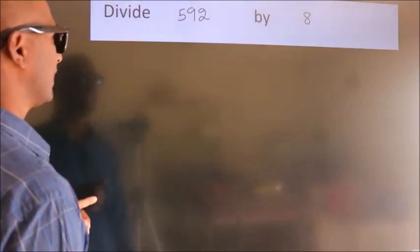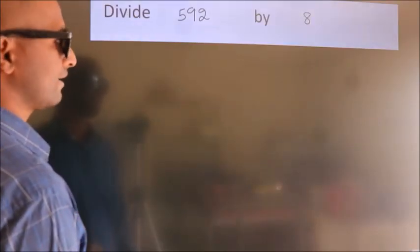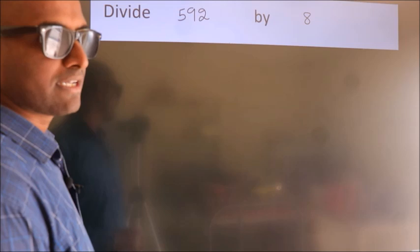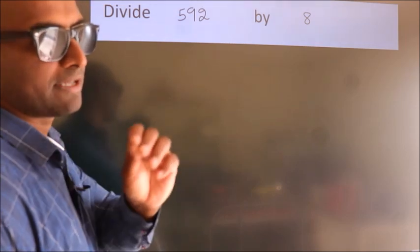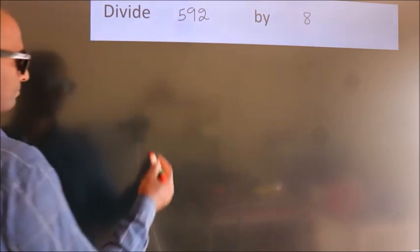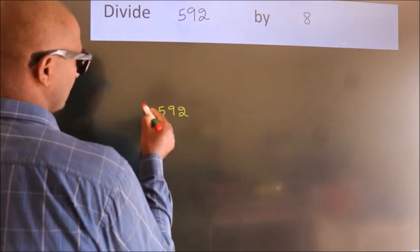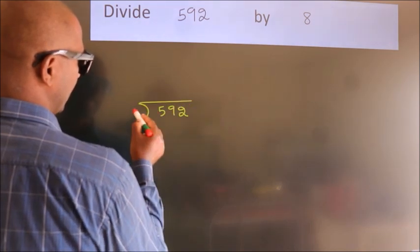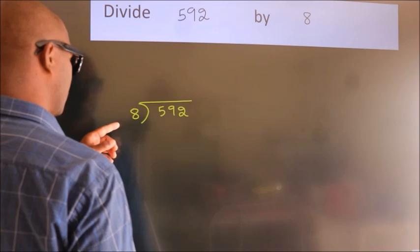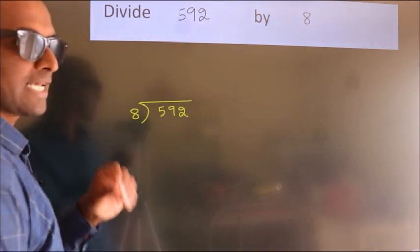Divide 592 by 8. To do this division, we should frame it in this way: 592 here, 8 here. This is your step 1.